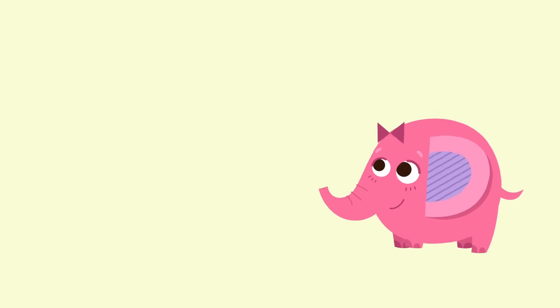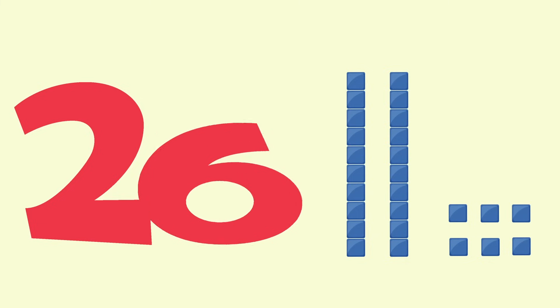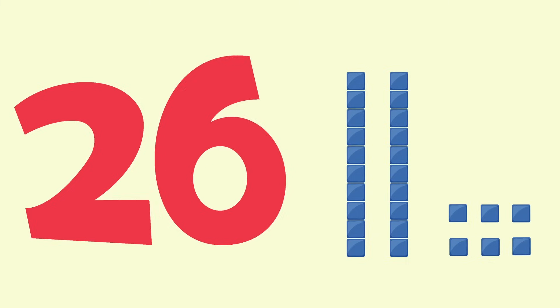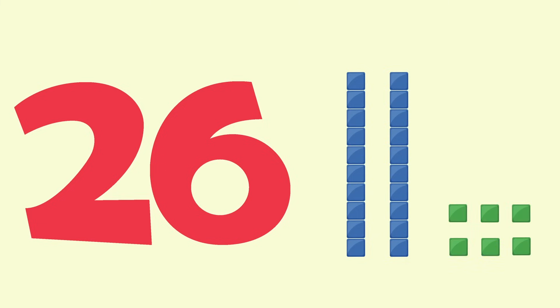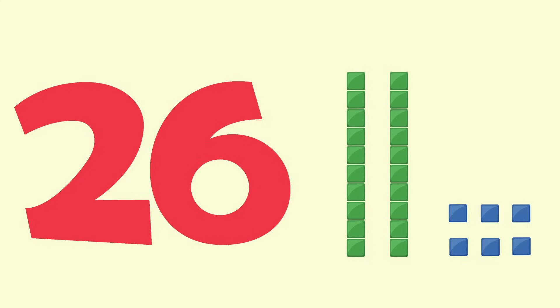In the number 26, the six is in the ones place and the two is in the tens place. The six is worth just six, which is represented by six cubes. The two is worth 20 because it is in the tens place, and is represented by the two long tens blocks. You can count by tens using the base ten blocks or just count in your head: 10, 20.